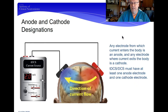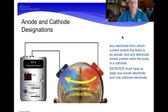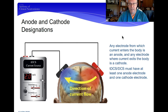To review from lesson one: an electrode from which the current enters the body is known as the anode, and any electrode where the current exits the body is known as the cathode. Current flows from anode to cathode, while electrons flow from cathode to anode. When talking about tDCS, especially in clinical application, we're referring to the flow of current from anode to cathode.